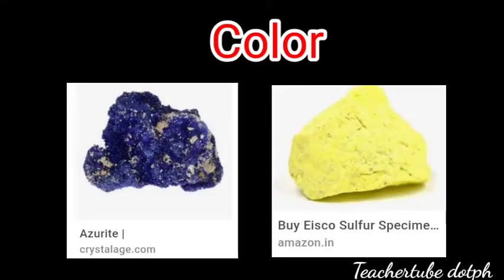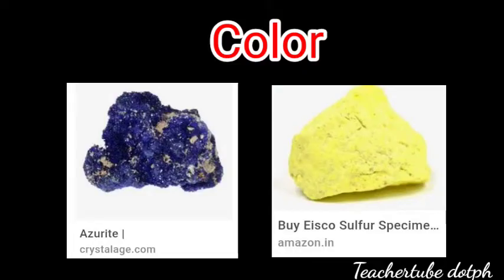The next physical property is color — whatever you can observe with the naked eye. However, this property can be tricky because some minerals change their color when in powdered form. Here we have two minerals: azurite, which is a deep blue mineral that does not change its color, and sulfur, which is always yellow in color.